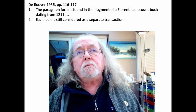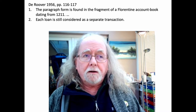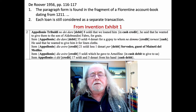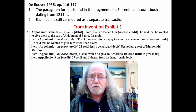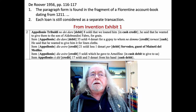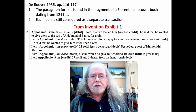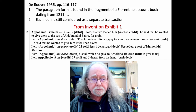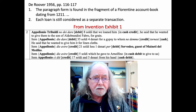De Roover talks about the shift to a bilateral format where debits and credits are on opposite pages. When he wrote this, English-language accounting historians did not know this background — it was all new to them. He says the paragraph form is found in the Florentine account book from 1211 and each loan is still considered a separate transaction. But actually, the second account in the exhibit doesn't treat each loan as a separate transaction — de Roover had missed that. He'd probably looked at it but not studied it very closely, and at that point there were no English translations; the transcriptions were in medieval Italian.